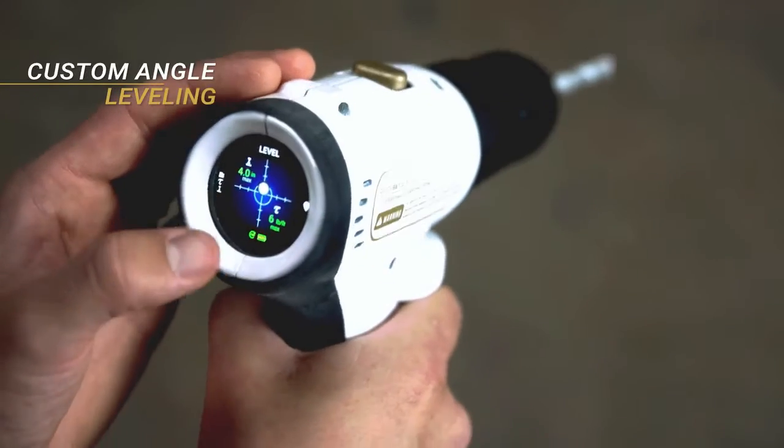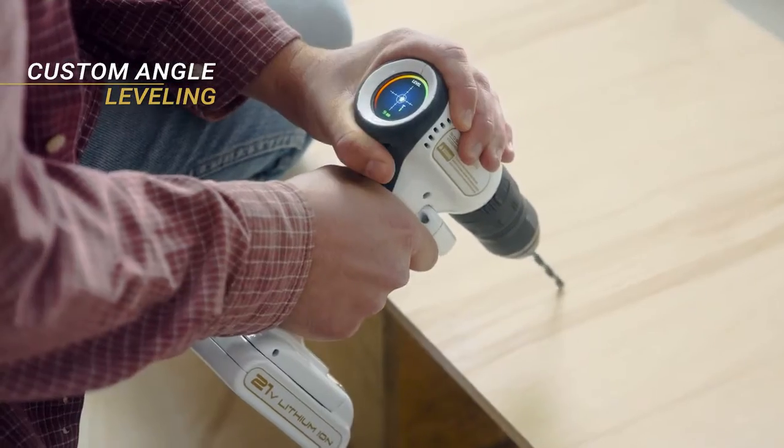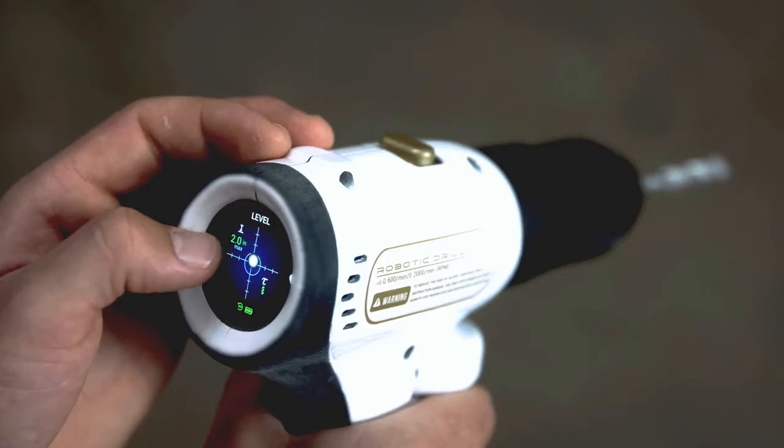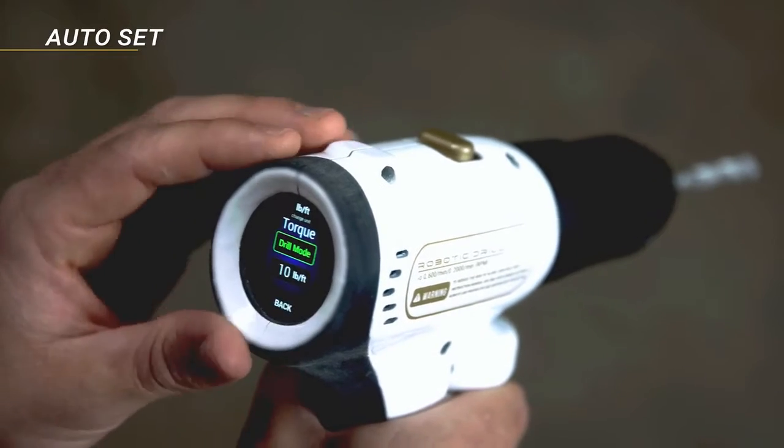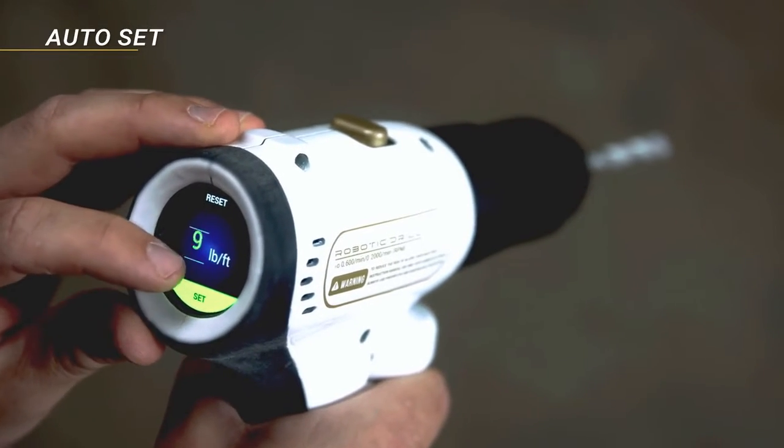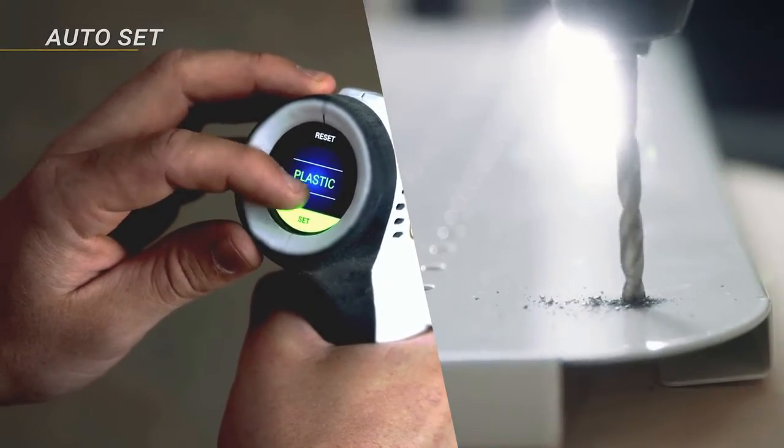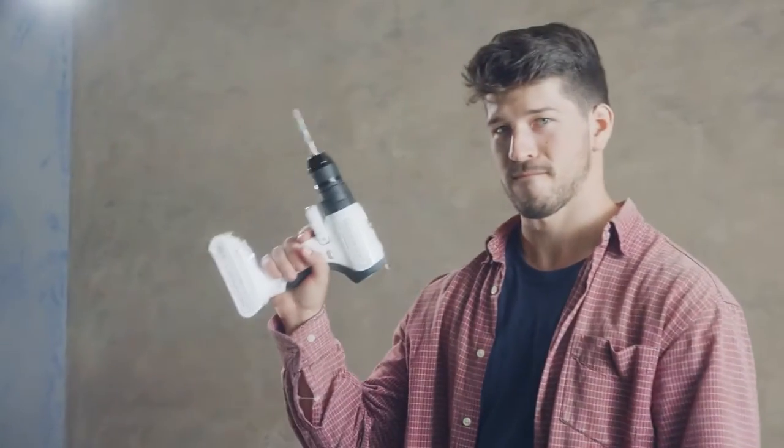Second, is custom angle leveling. Tap, save an angle and any two holes you drill will have the same angle. And finally, auto set allows you to automatically set torque speed according to the material you're working with and the size of the drill bit. Of course, you can still adjust torque manually. We're here to improve, not extract.